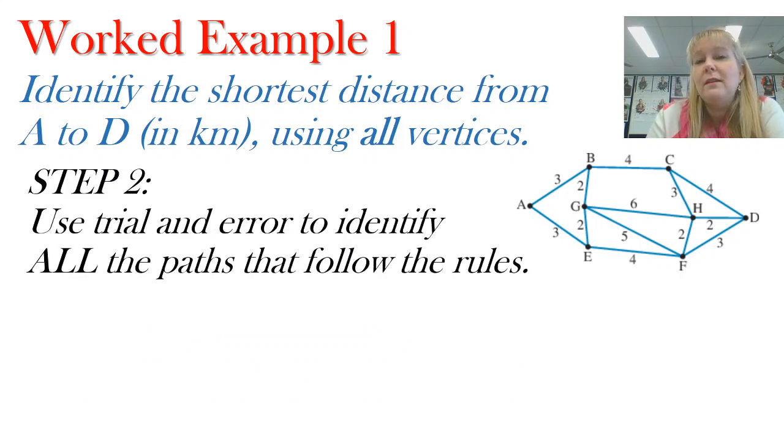Step two is I'm going to look at using trial and error again. I'm sure some of you are sick of using trial and error by now, but I need to find all the different pathways I could follow that's going to follow that rule. There could be more than one way to get through a network, and we're wanting to find that shortest distance. So I need to find every way through the network first, and then identify which one's the shortest.